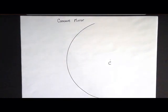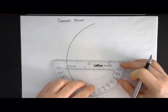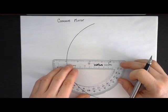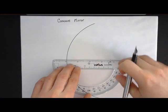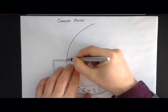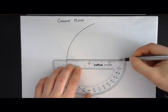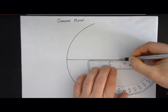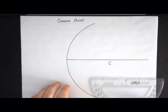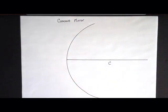Note that for mirrors the center is the geometric center of the circle, whereas for lenses the center is the middle part, so it's a slight difference in terminology. Now I'm going to draw my optical axis which connects the center of the mirror and goes outwards.